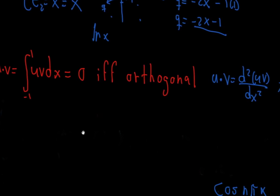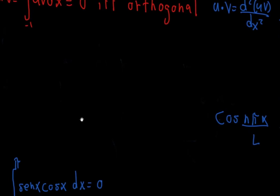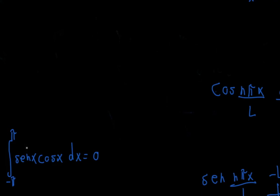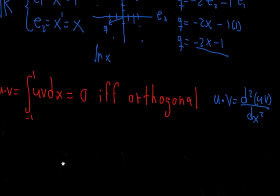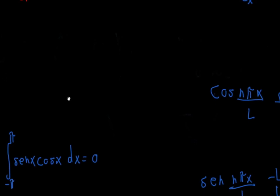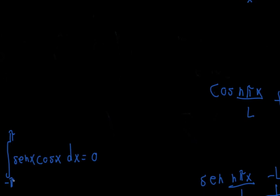Fourier was thinking about these two. He came across the trigonometric functions sine and cosine. He knew about them and he knew this integral — you can pause the video and do it. And he realized this seems to be very similar to this definition here. They seem to be orthogonal in this interval from minus pi to pi. They are orthogonal here. And he thought they could make for a really interesting base vector, sine and cosine — I could make some very interesting linear combinations with them.